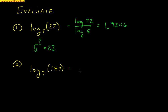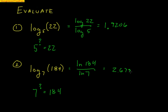Here's another one: log base 7 of 184 — meaning 7 raised to what equals 184? This time I'll use the natural log: natural log of 184 divided by natural log of 7. I don't have a log base 7 button, but I do have the natural log button. Typing that in, I get 2.6799. I check by doing 7 raised to 2.6799 and get something extremely close to 184. It's a nice, easy way to use the change of base rule to find logs very quickly.